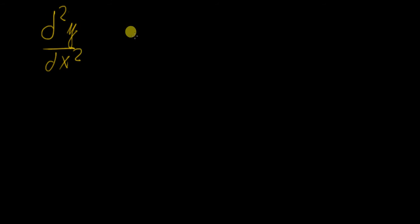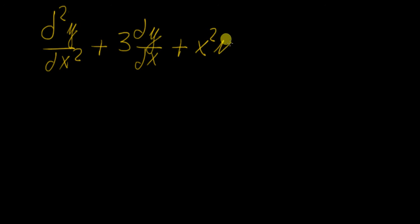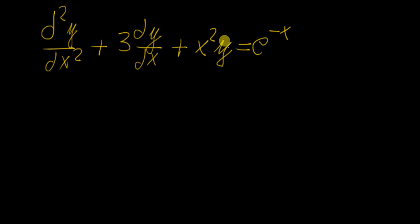The first one is going to be the second derivative of y with respect to x, and it's going to have some other terms: a first derivative, and then an x squared times the function itself, equal to another function of x. This is an example of a linear differential equation because all the terms involving the function y and the derivatives of y are simply linear — there's no function acting on them, they're just there by themselves, multiplied only by functions of x or constants.